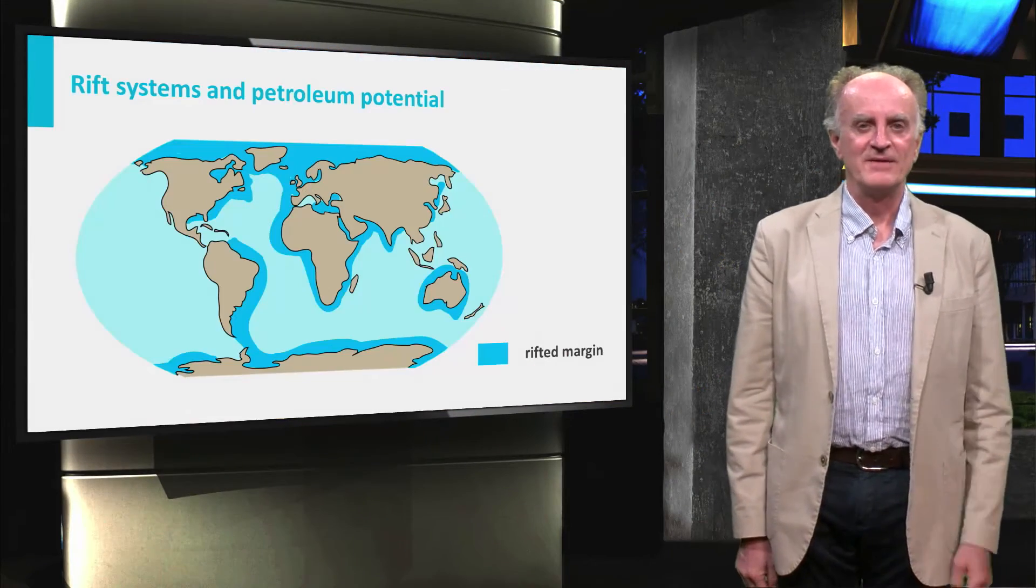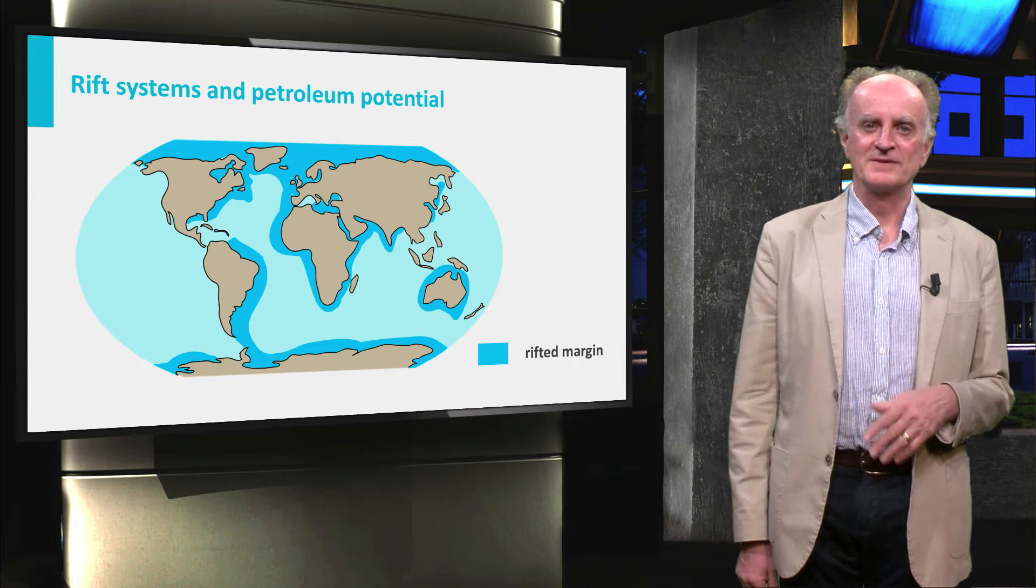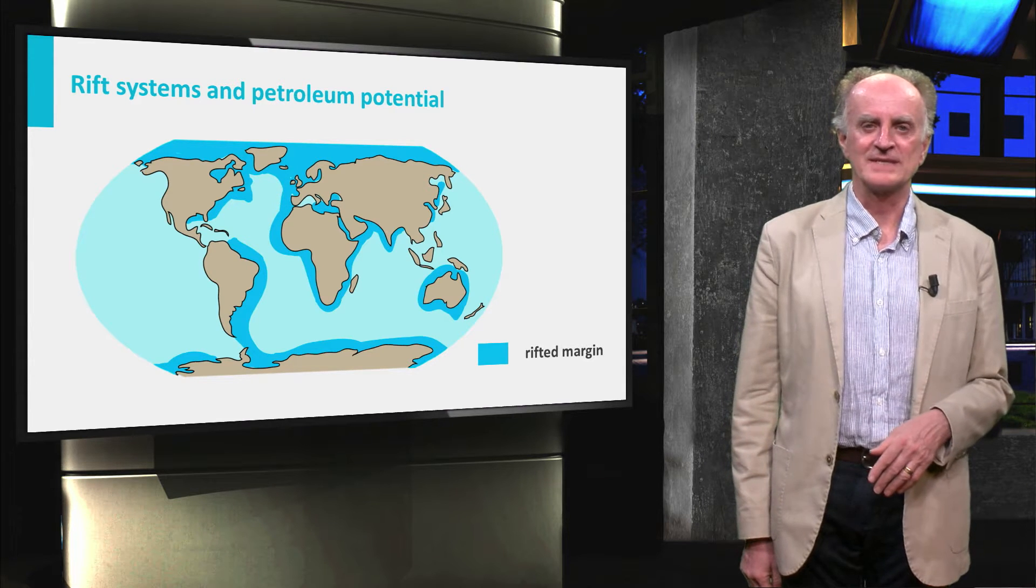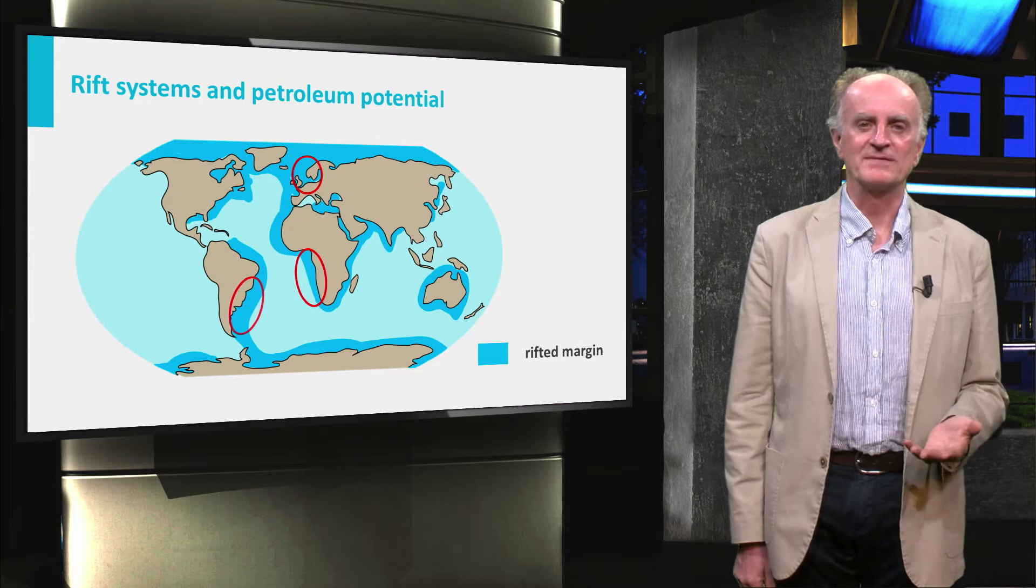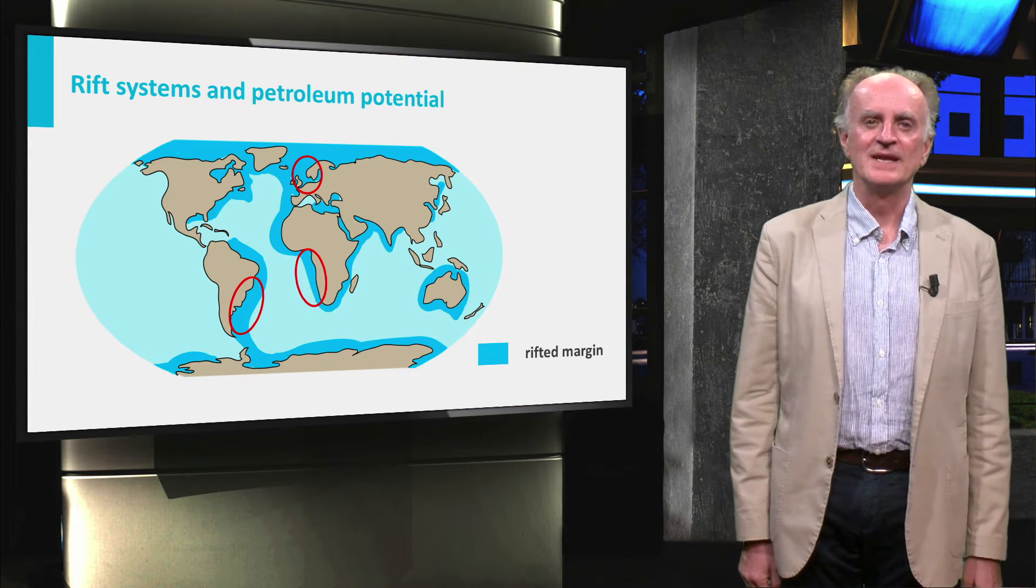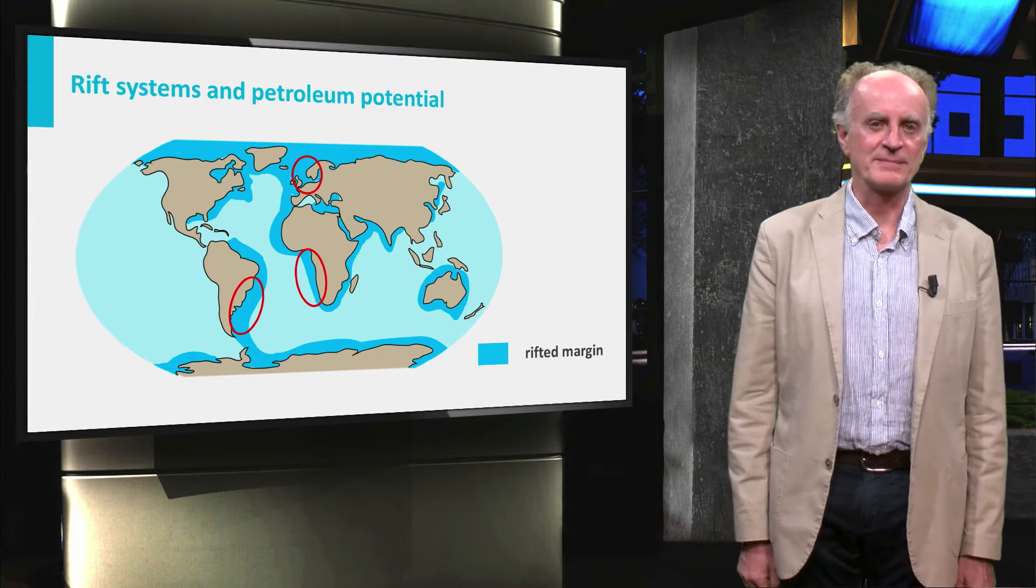Welcome back. Very prolific hydrocarbon provinces are hosted in extension systems such as continental rifts like the North Sea and passive margins like in West Africa or South America.